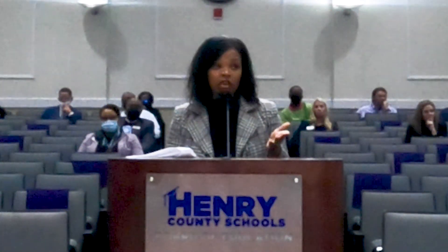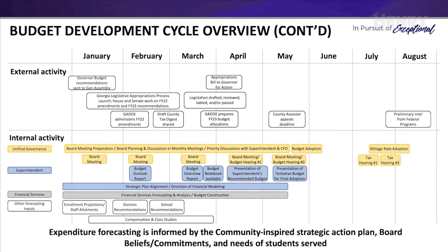The legislature will convene in January — this year on January 11th. Within five days of convening, the governor is required to give them a budget. The House will have a view of the budget, the Senate will have a view of the budget. If they don't have the same budget, which typically they do not, there's a conference where they work through to get to a common recommendation and appropriations. The appropriations budget usually finalizes around April when the legislative cycle is beginning to end, and it then goes to the governor to execute and approve.